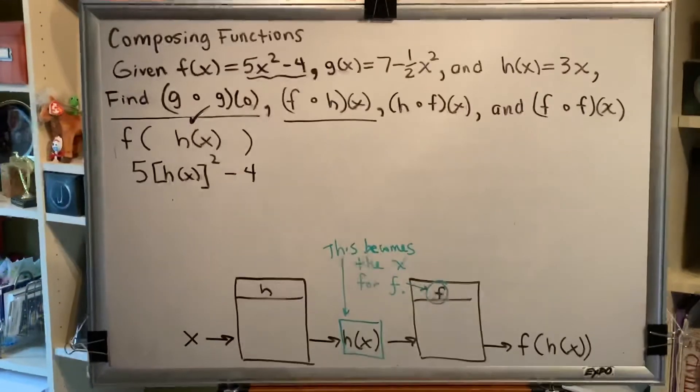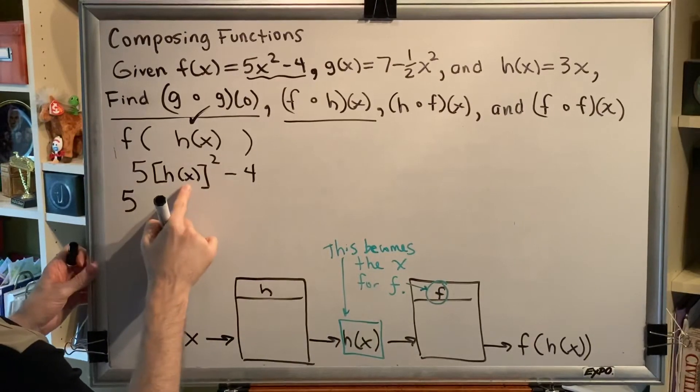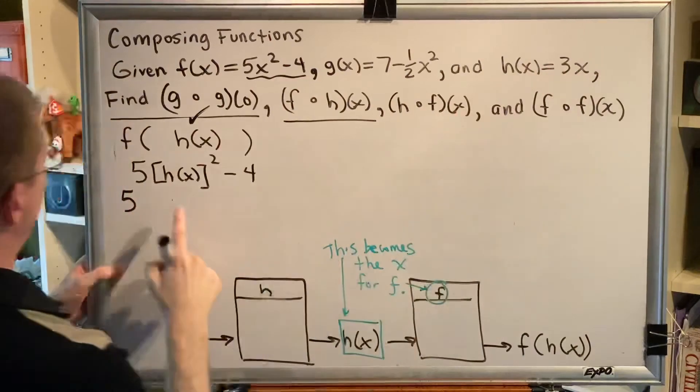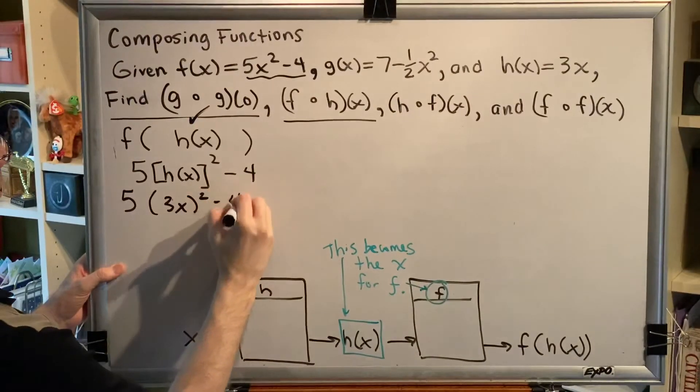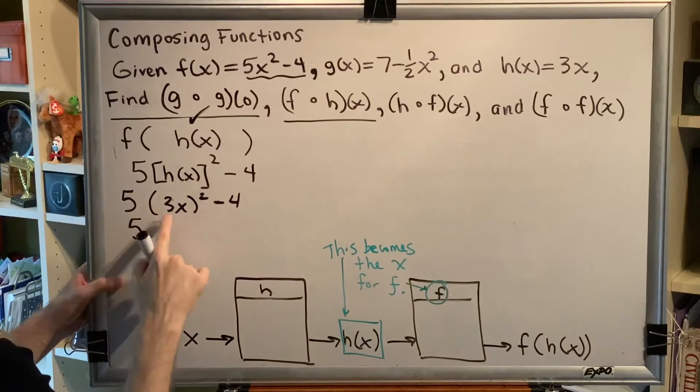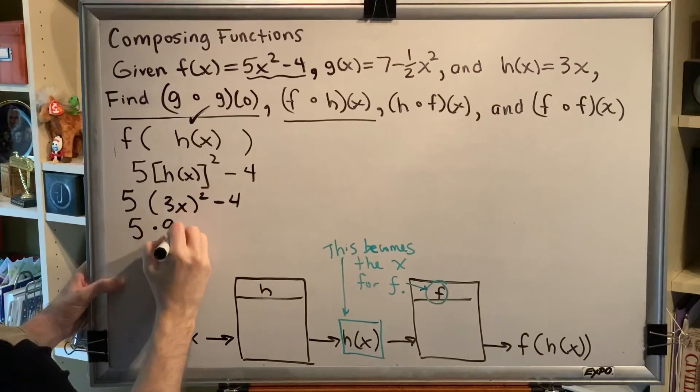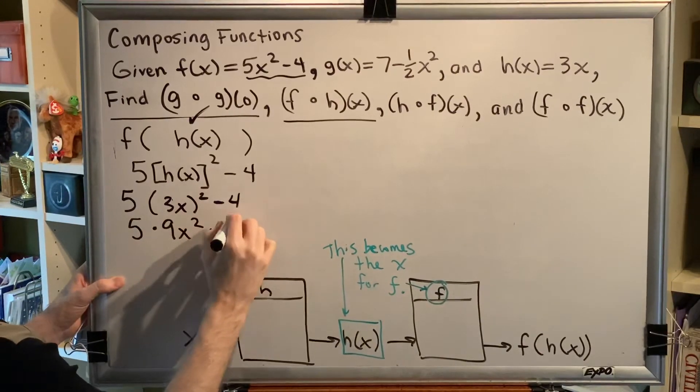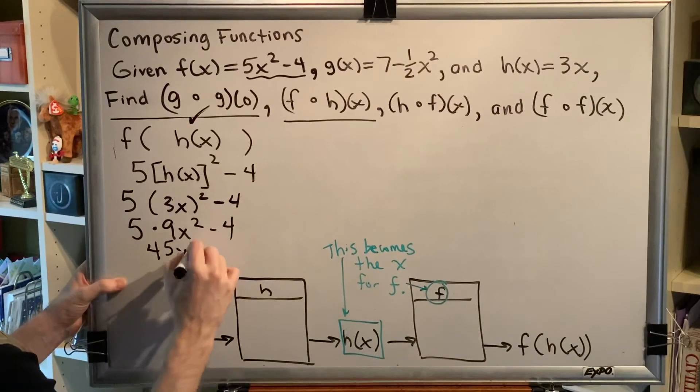Okay, so now that we have that, we just have to substitute and simplify. h of x is equal to 3x. So we're going to write 3x in parentheses. Order of operations says exponents go first. 3x squared is a 3x times a 3x, which is a 9x squared. Multiplication comes next. So we get 45x squared, subtract 4.